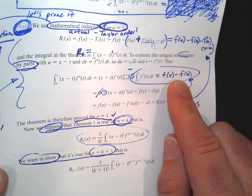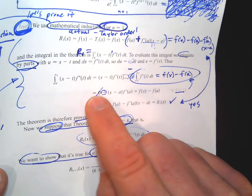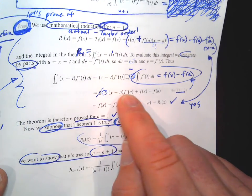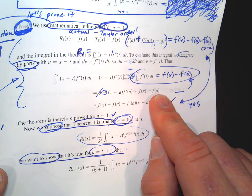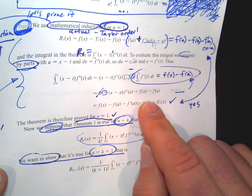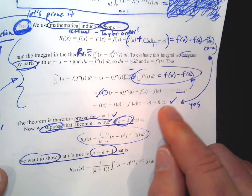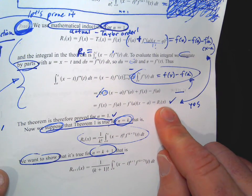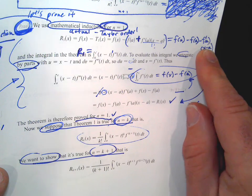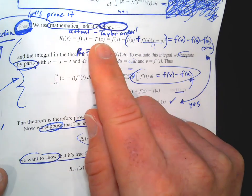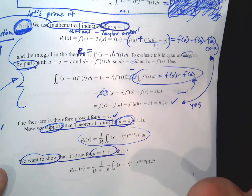If we plug the limits in, x minus x is zero, so that first term goes away. Then you plug a in and get x minus a times f prime of a, which is negative. And then you have plus f of x minus f of a. If we rearrange it — f of x minus f of a minus f prime of a times x minus a — this is the expression for the first-order remainder. Comparing it to what we got by just taking the function minus the first-order polynomial, we get the same thing. That proves it for the special case n equals 1.